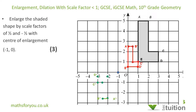For E prime prime — from the center of enlargement, E is 2 to the right and 1 up. With scale factor minus one half, I move 1 to the left and a half down. That's E prime prime. Joining all the points, the drawing in green is the enlargement of the object with center of enlargement at minus 1, 0 and scale factor of minus one half.